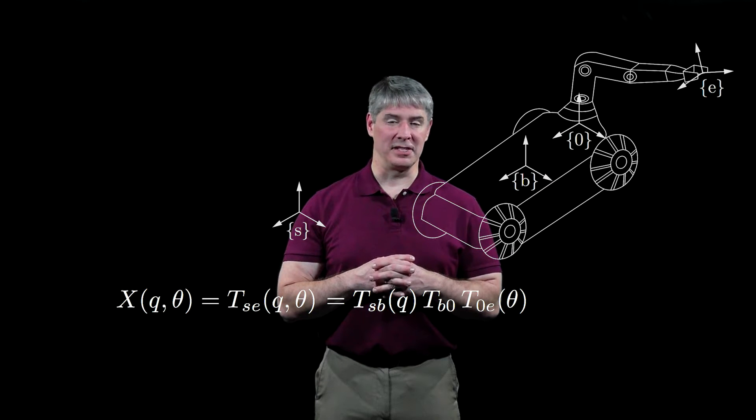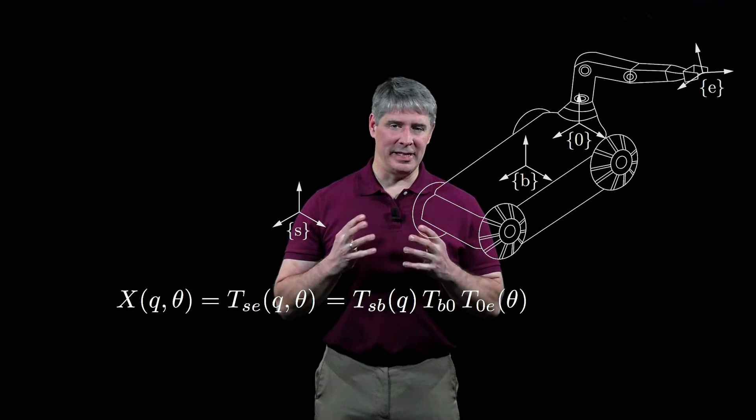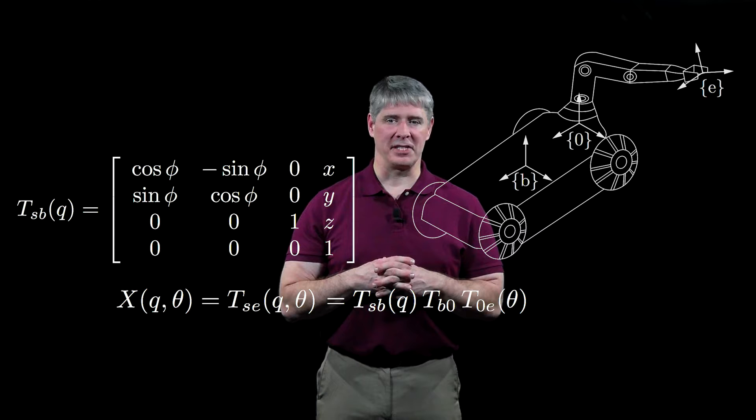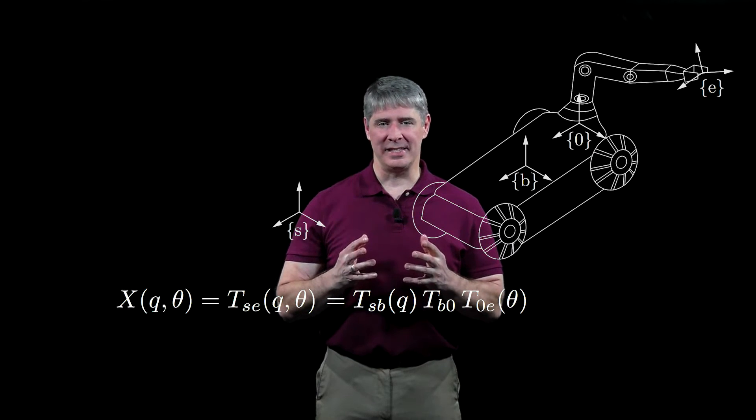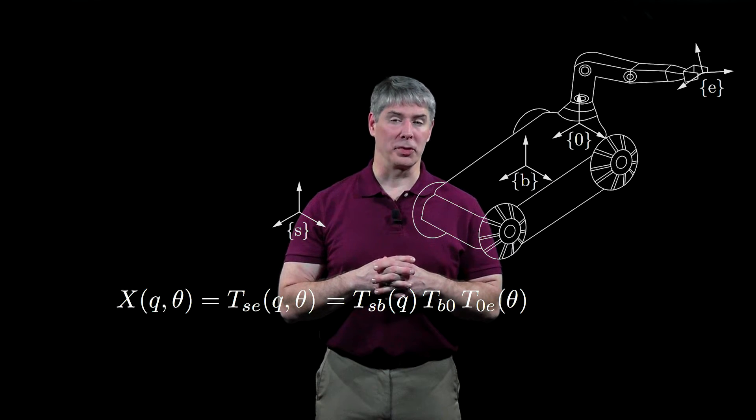TSB can be written as a function of the chassis configuration q = (φ,x,y), and z is the constant height of the frame. T0E is determined by the forward kinematics of the arm.